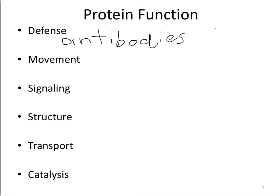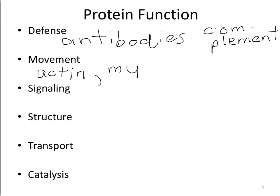For example, complement is a type of protein made by our immune system. These work together and separately to fight off invaders. Another important function proteins perform is in movement. Muscle tissue contains fibers, and the proteins in those fibers are made of actin and myosin, which make up most of muscle.